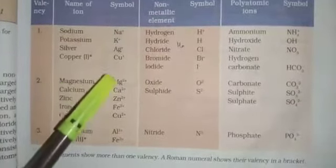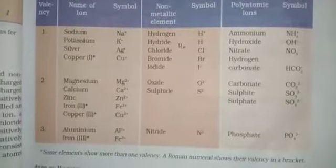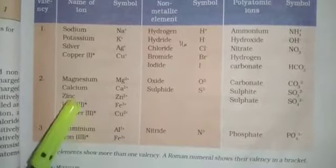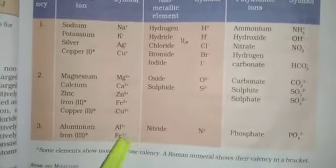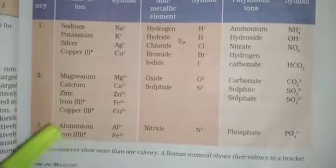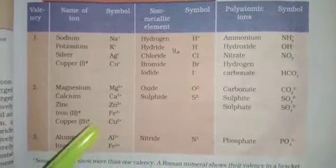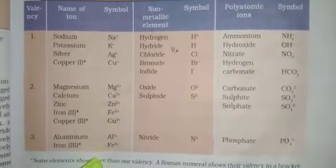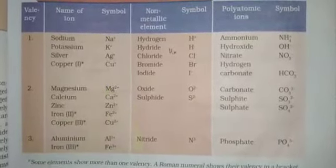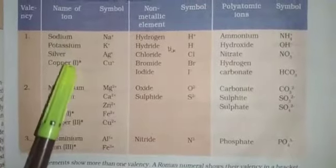Here you can also see magnesium Mg2+ and iron Fe2+. Sometimes they will give numbers in brackets — 1, 2, 3 — showing that the oxidation state is variable. For copper and iron, the oxidation state changes: for iron it can be 3+ or 2+, and for copper sometimes it will be Cu+ and sometimes Cu2+.